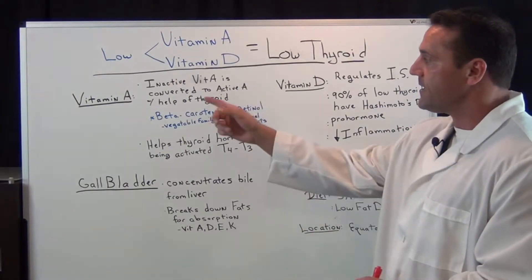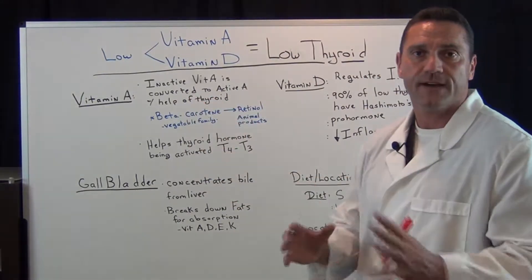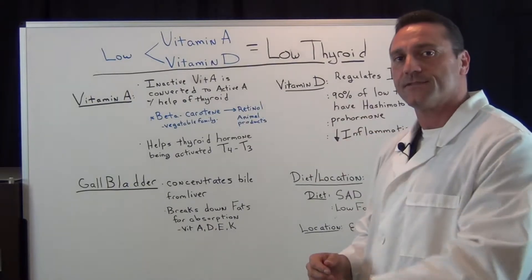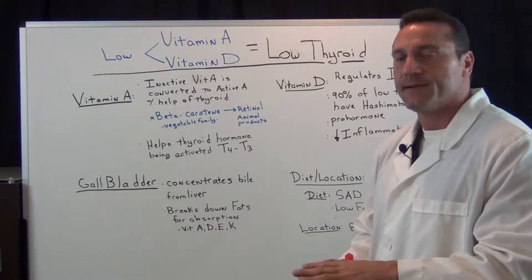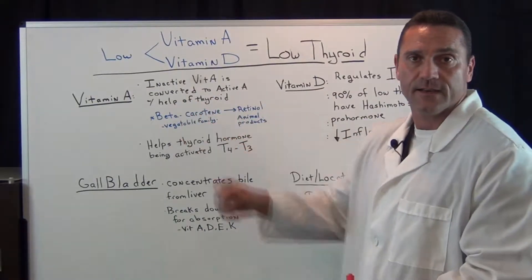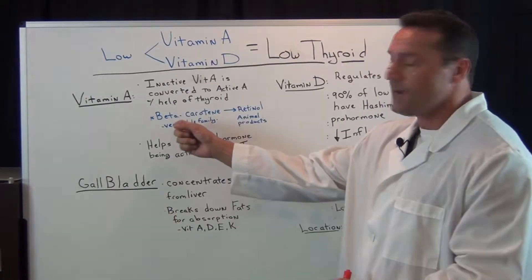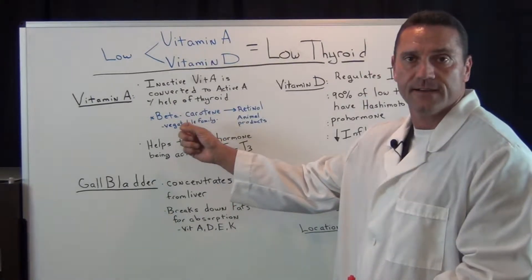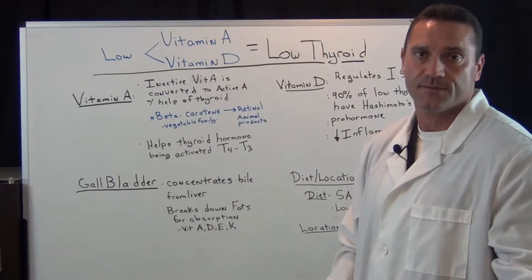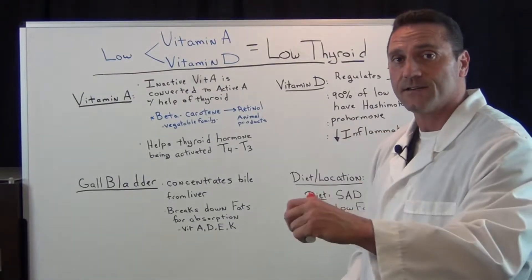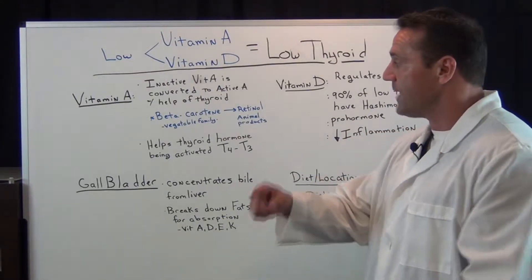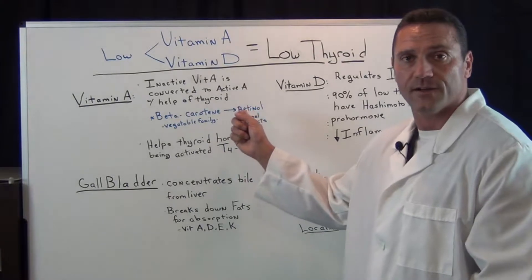Now vitamin A — there are two types of vitamin A. There's inactive vitamin A, which is beta carotene, and that gets converted to active vitamin A with the help of the thyroid gland. We take in inactive vitamin A through our vegetable products, and it gets converted to active vitamin A, which is retinol.